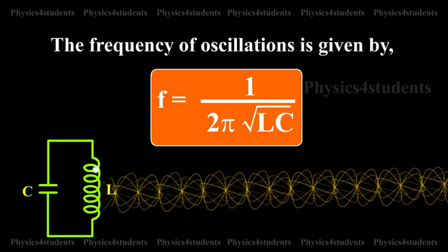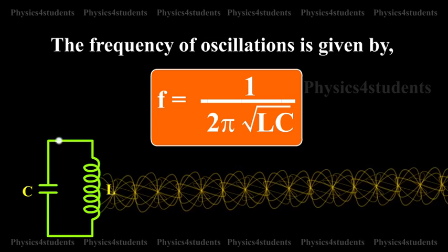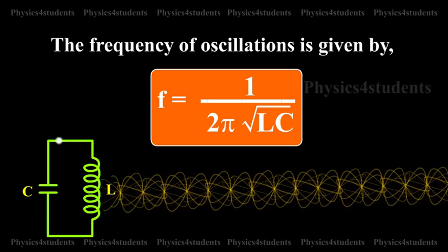The frequency of oscillation is given by F = 1/(2π√(LC)).